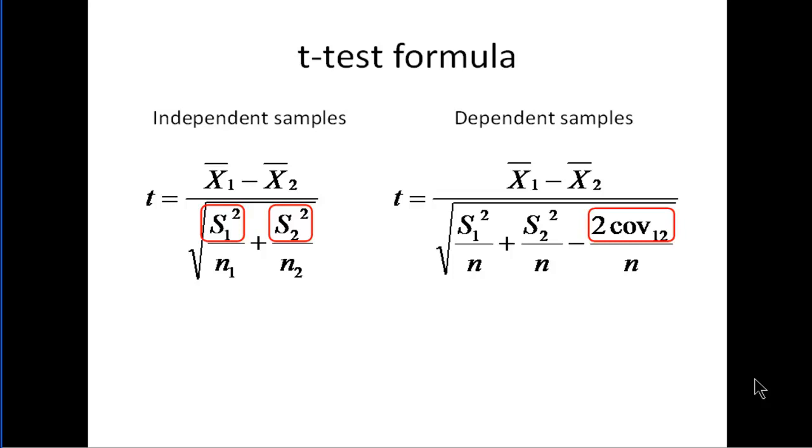There's almost invariably a positive correlation between time one and time two. And when that correlation is expressed in unstandardized form, it's a covariance. And you subtract that term from the variances. You basically subtract it from the standard error of the difference between the means. And that causes the dependent sample t-test to be much more powerful than the independent sample t-test because you're subtracting the correlation between time one and time two from the two variances.